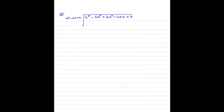Question number 5: if the polynomial x to the 4 minus 6x cubed plus 16x squared minus 25x plus 10 is divided by x squared minus 2x plus k, and the remainder comes out to be x plus a, find k and a. We will start by dividing and equating the remainder to x plus a.